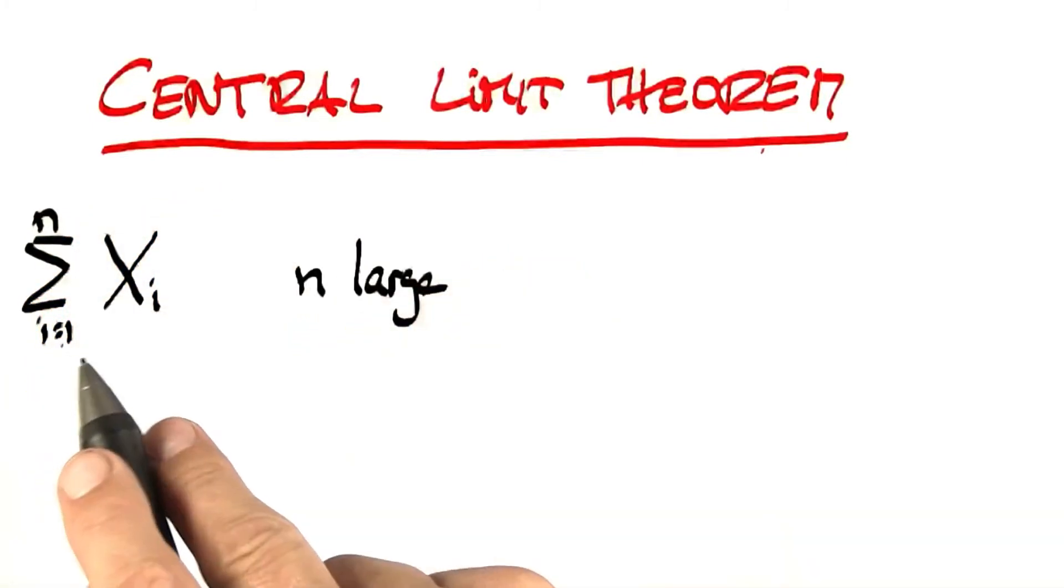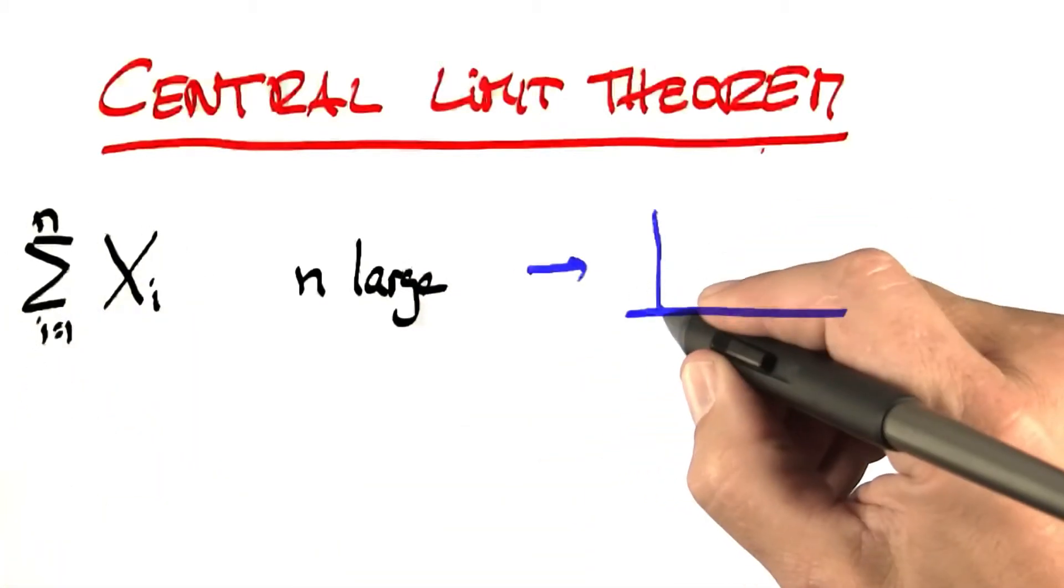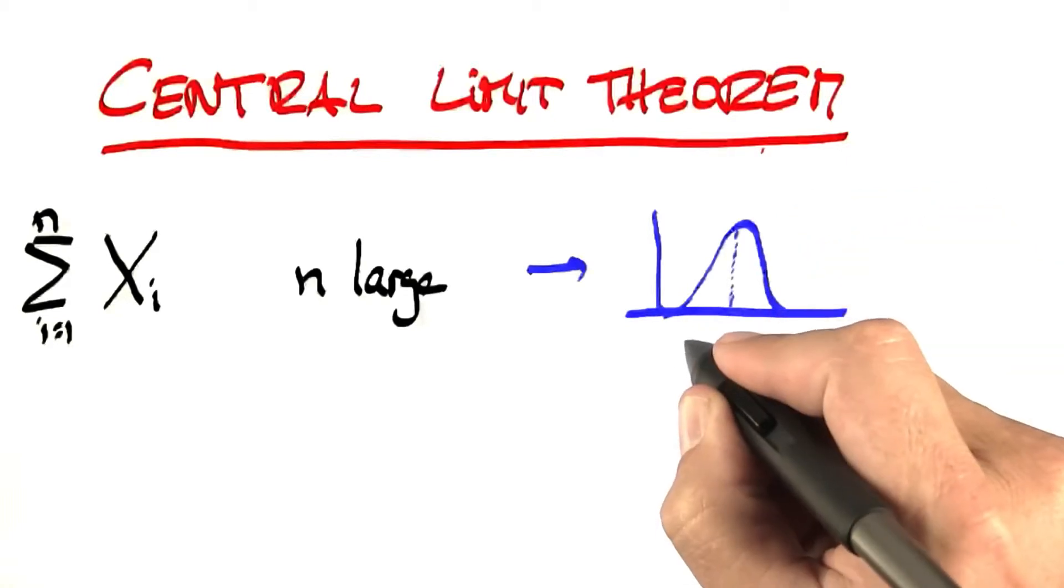If n is large, then the joint distribution of the sum of those experiments will approach a function that looks like this. That's called a Gaussian.